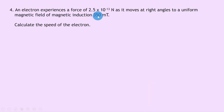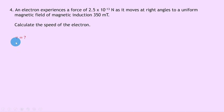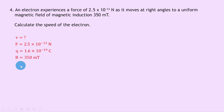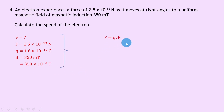Question four: an electron experiences a force of 2.5 times 10 to the minus 13 newtons as it moves at right angles to a uniform magnetic field of magnetic induction 350 millitesla. Calculate the speed of the electron. We're trying to find speed v. Force f is 2.5e-13 newtons, charge q is 1.6e-19 coulombs, and b is 350 millitesla, converted to 350 times 10 to the minus 3 tesla.